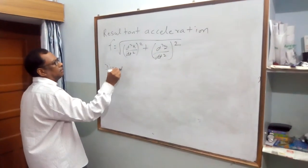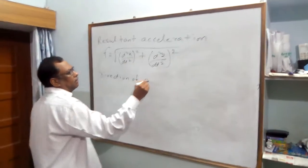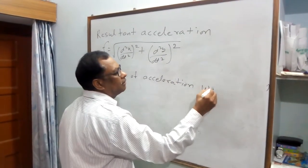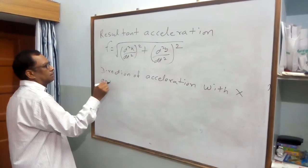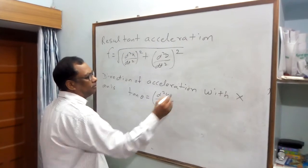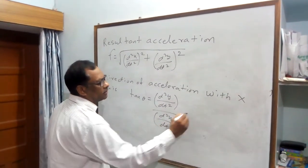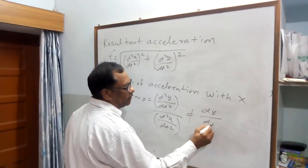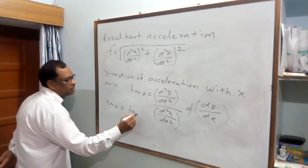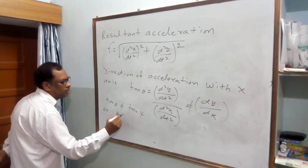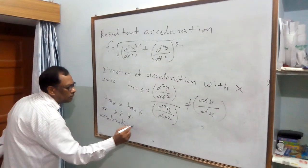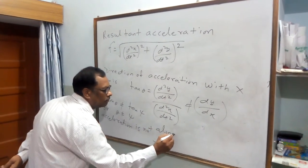The direction of acceleration with the X-axis is given by tan θ equals Fy/Fx. Note that tan θ is not equal to tan φ, meaning theta is not equal to phi — the direction of acceleration does not coincide with the direction of velocity.